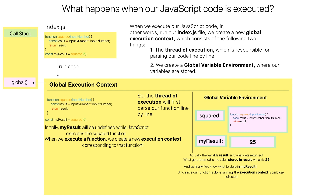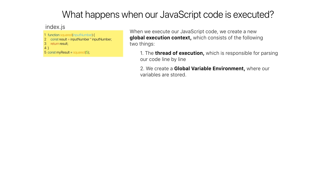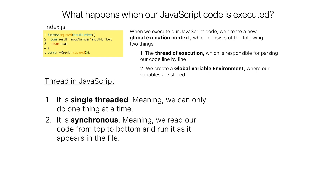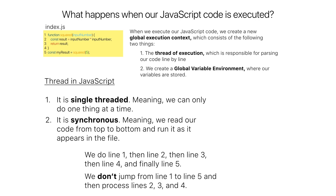There are a few more things to note about the thread in JavaScript. First, it is single-threaded, meaning we can only do one thing at a time. Second, it is synchronous, meaning we read our code from top to bottom and run it as it appears in the file — line one, then line two, then line three, and so on. We don't jump from line one to line five and then process lines two, three, and four. That's now the global execution context in JavaScript.